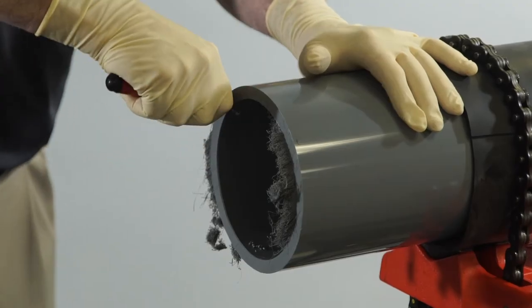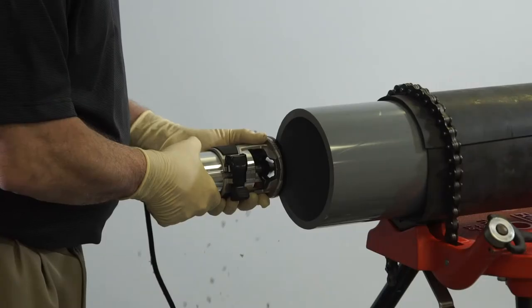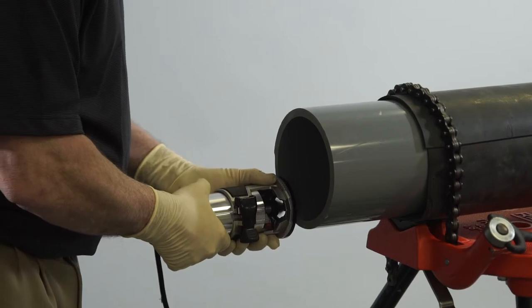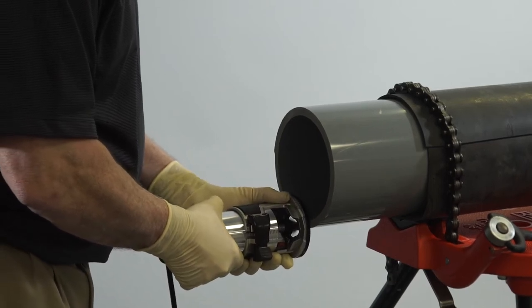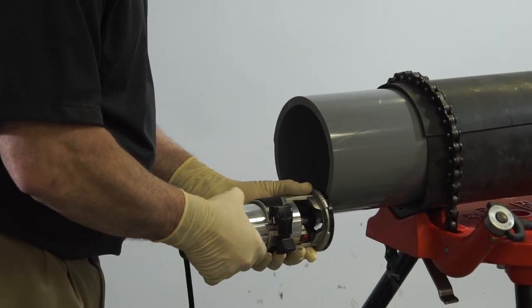Remove inside diameter burrs or raised beads with an internal deburring tool or knife. Remove any burrs or raised beads on the outside diameter of the pipe. Burrs can create channels into pre-softened surfaces or can create gaps across the mating surfaces.